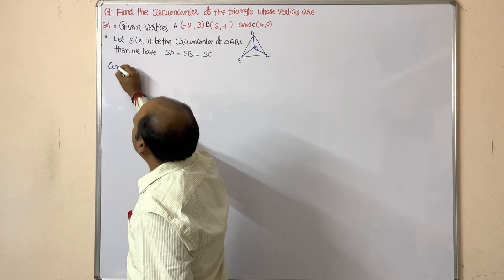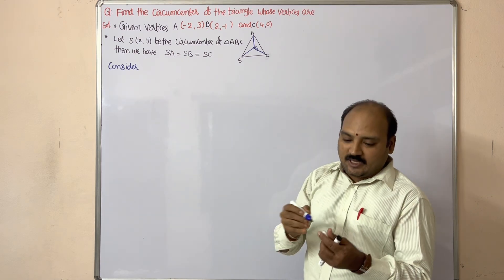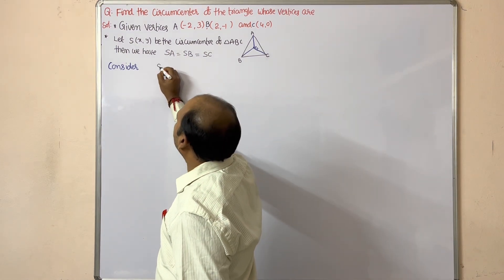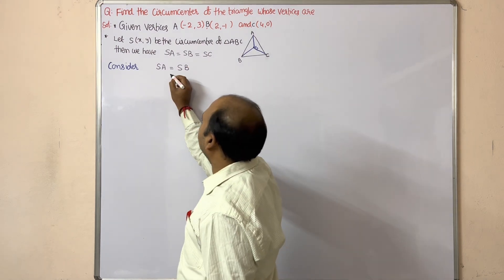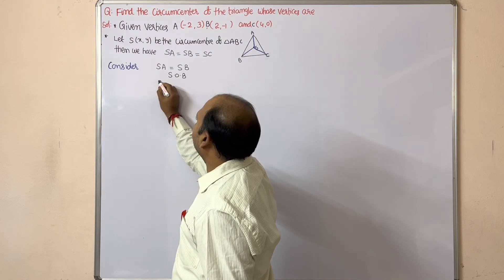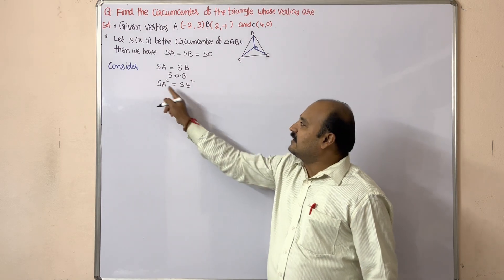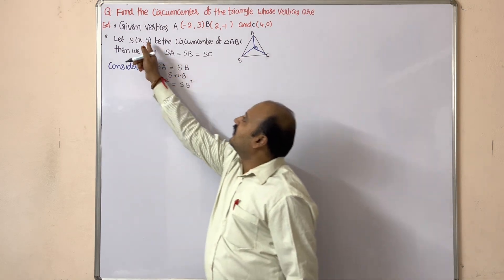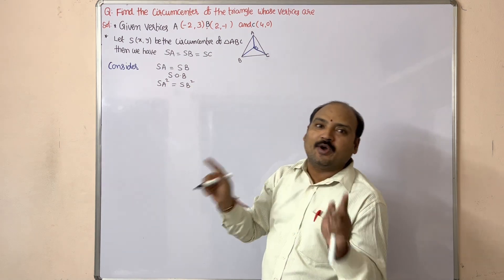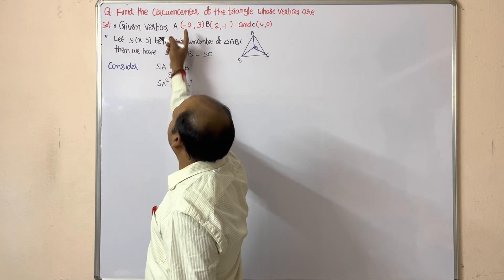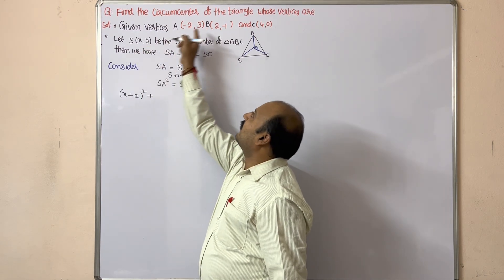Since S is the circumcenter, we have SA = SB = SC. In the next step, consider SA = SB. Squaring on both sides gives SA² = SB². The meaning of SA² is the squared distance between S and point A — without the root. So: (x + 2)² + (y − 3)²